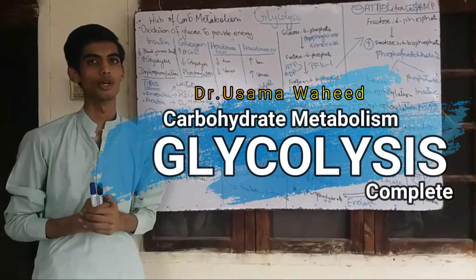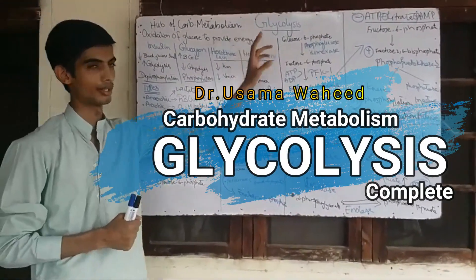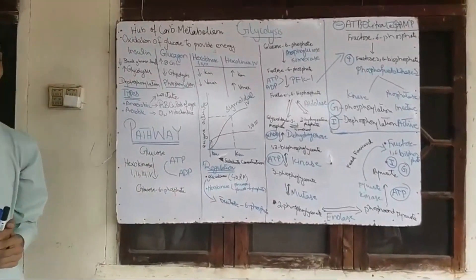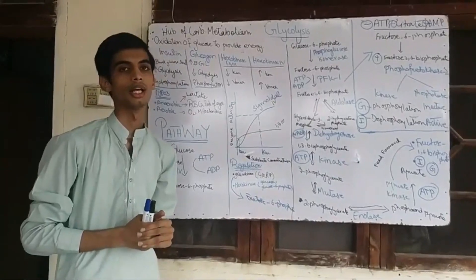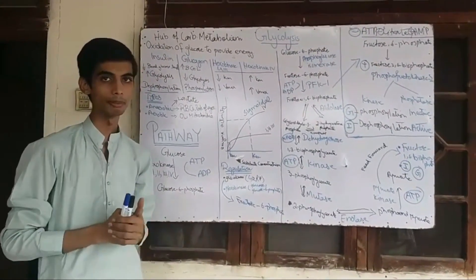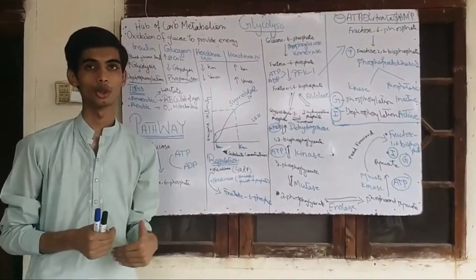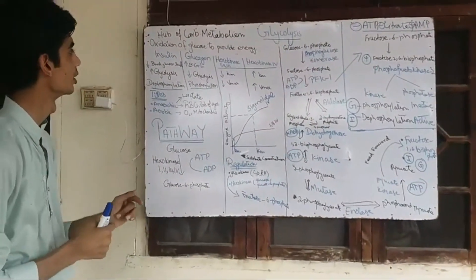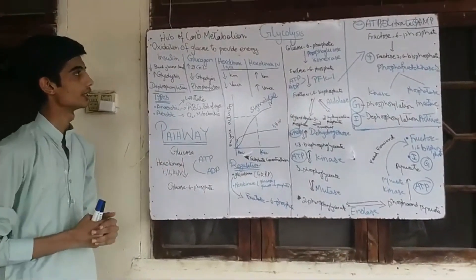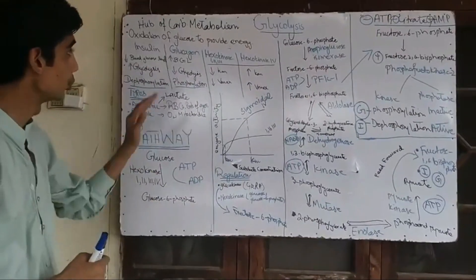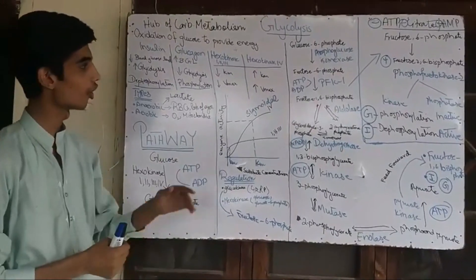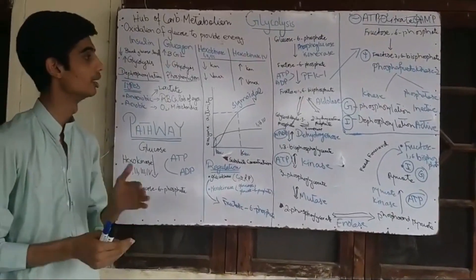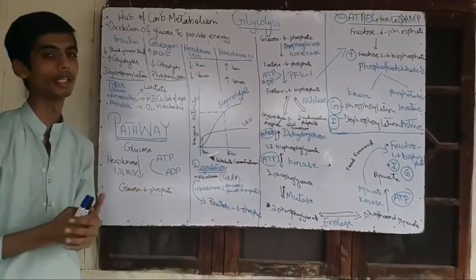Today we are going to start with metabolism of carbohydrates and our first topic is glycolysis. Glycolysis, in simple words, is the breakdown of glucose — it is the hub of carbohydrate metabolism. Every cell of our body depends upon glycolysis for ATP. Pyruvate is produced, which is then converted into acetyl-CoA, which enters the TCA cycle for the formation of ATP. So glycolysis is the oxidation of glucose to provide energy, and its intermediates feed into fatty acid and protein metabolism.